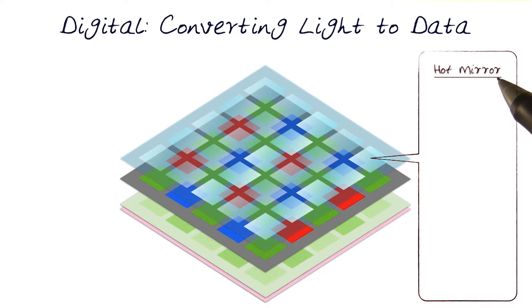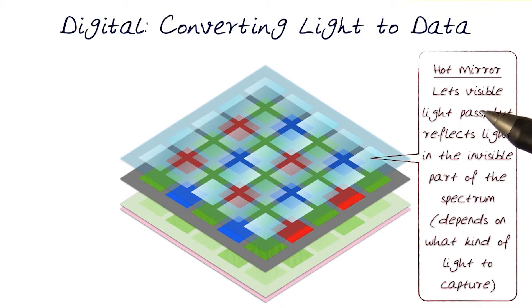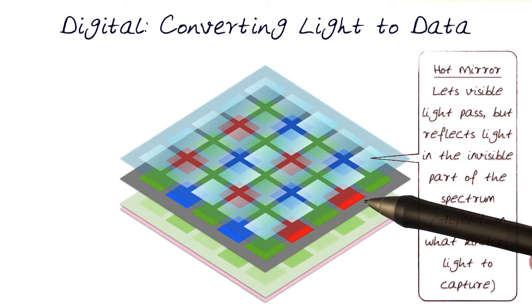The next layer is referred to as the hot mirror. This is where some of the simple filtering is done. In the case of film, we saw the example of a UV filter. This is somewhat similar. It lets visible light pass but reflects light in the invisible spectrum.